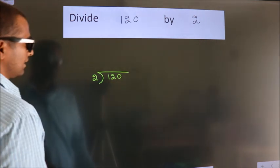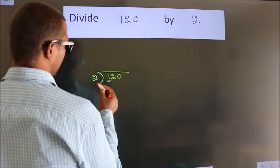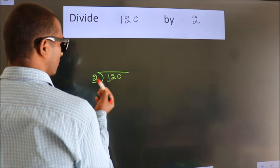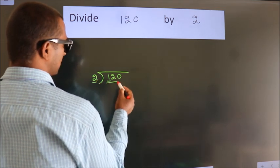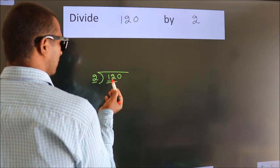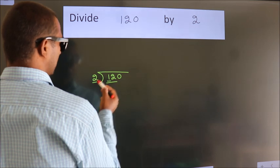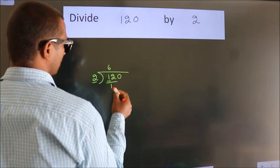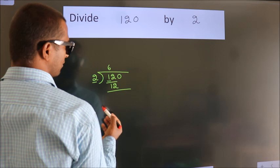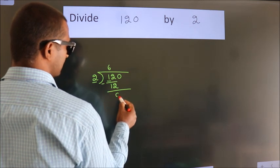Next. Here we have 1, here 2. 1 smaller than 2. So we should take 2 numbers, 12. When do we get 12? In 2 table. 2, 6, 12. Now we should subtract. We get 0.